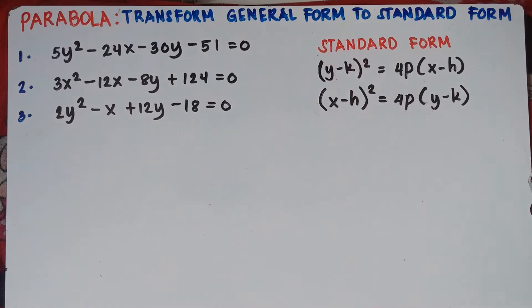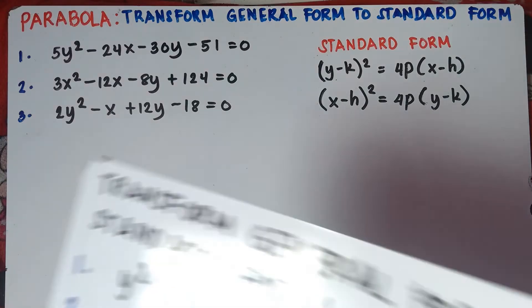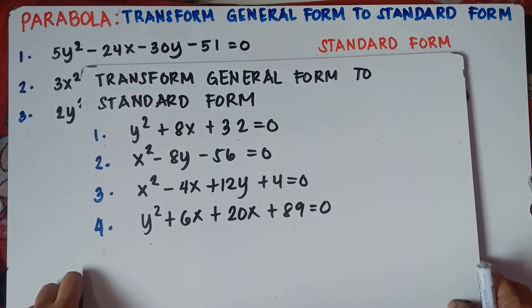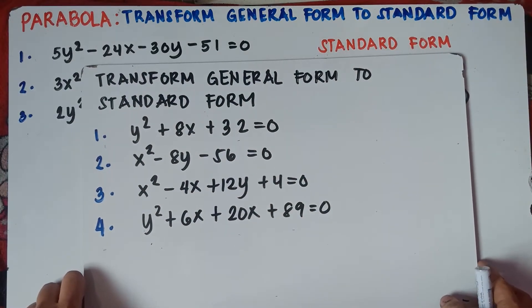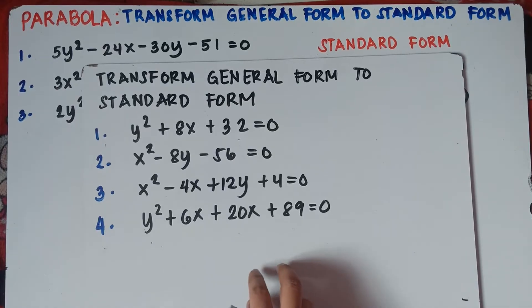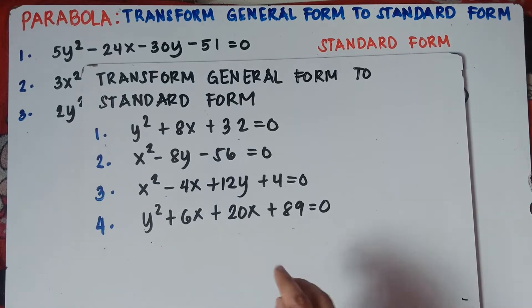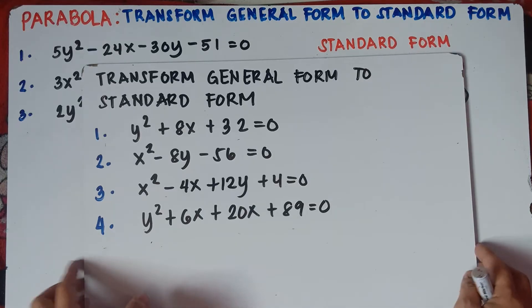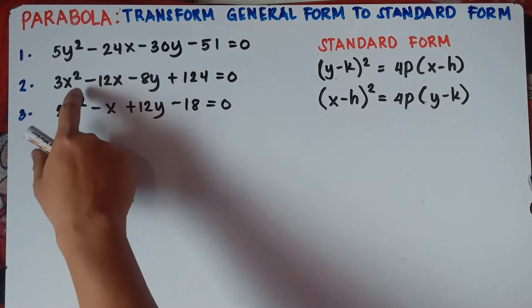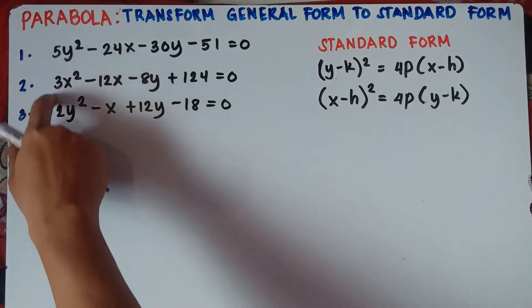This is already Part 2 of our video class. In Part 1, we solved the basic examples of converting general form to standard form. Feel free to see the link in the description down below. This time, class, it will be quite tricky since the number before x squared and y squared is greater than 1.